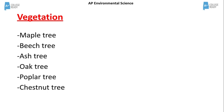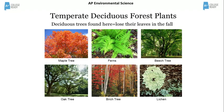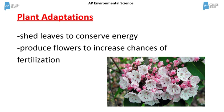Plant types in the temperate deciduous forest include various types of trees, including maples, beech, oak, and poplar. Deciduous means the trees lose their leaves in fall. Plant adaptations include the shedding of leaves in order to conserve energy during winter, and flower production, which increases fertilization.